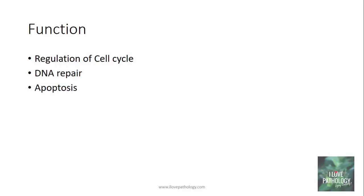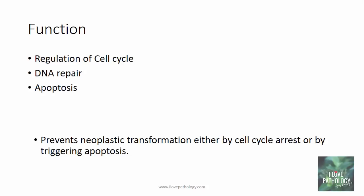What are the functions of p53 gene? The main function is it regulates the cell cycle, it helps in DNA repair, and it also promotes apoptosis. Basically, it prevents neoplastic transformation either by cell cycle arrest or by triggering apoptosis.